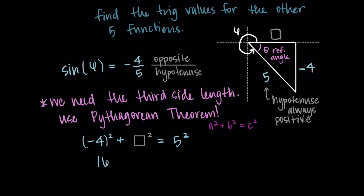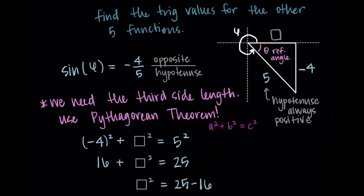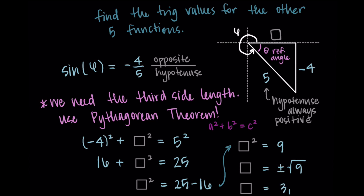Negative four squared is 16, and five squared is 25. Subtracting 16 from both sides gives the unknown squared equals 9. Taking the plus or minus square root gives solutions of 3 and negative 3. Since we're in quadrant four, this corresponds to a positive x value — we're going to the right — so I use positive 3 as my side length and label it on the picture.